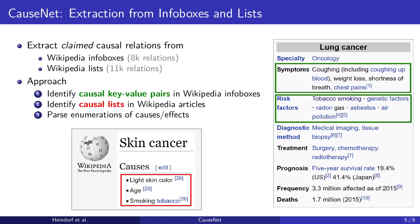Moreover, Wikipedia often contains lists of causes and effects in sections such as causes, symptoms or risk factors. For example, in Wikipedia it says that skin cancer may be caused by light skin color, age or smoking tobacco.